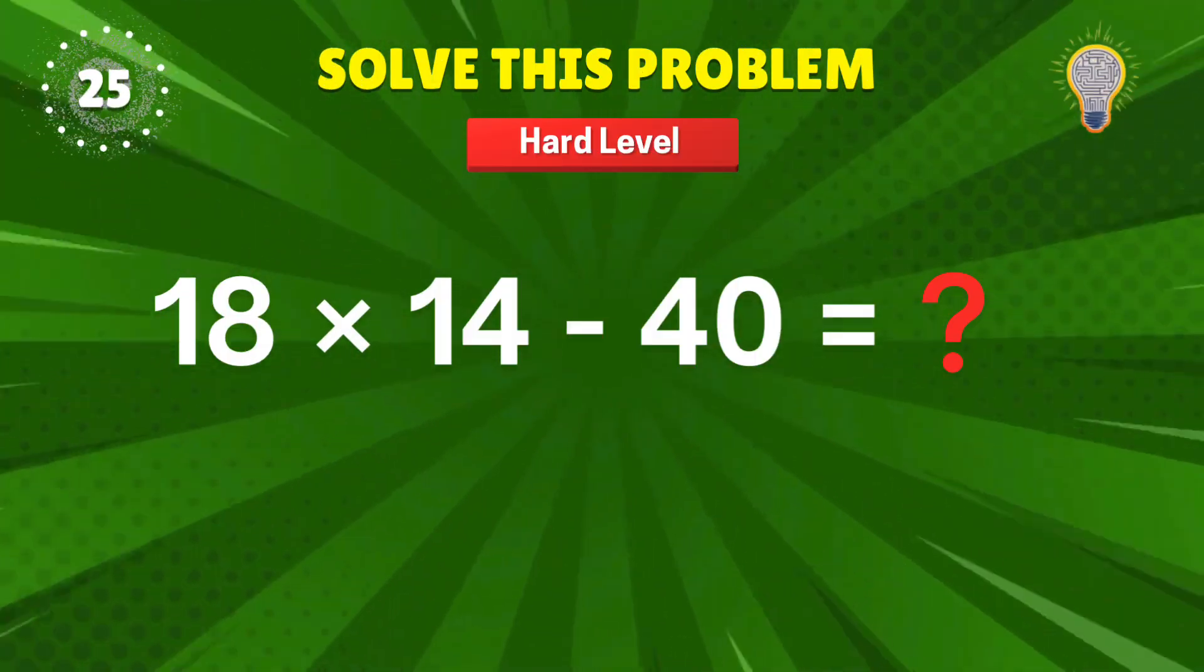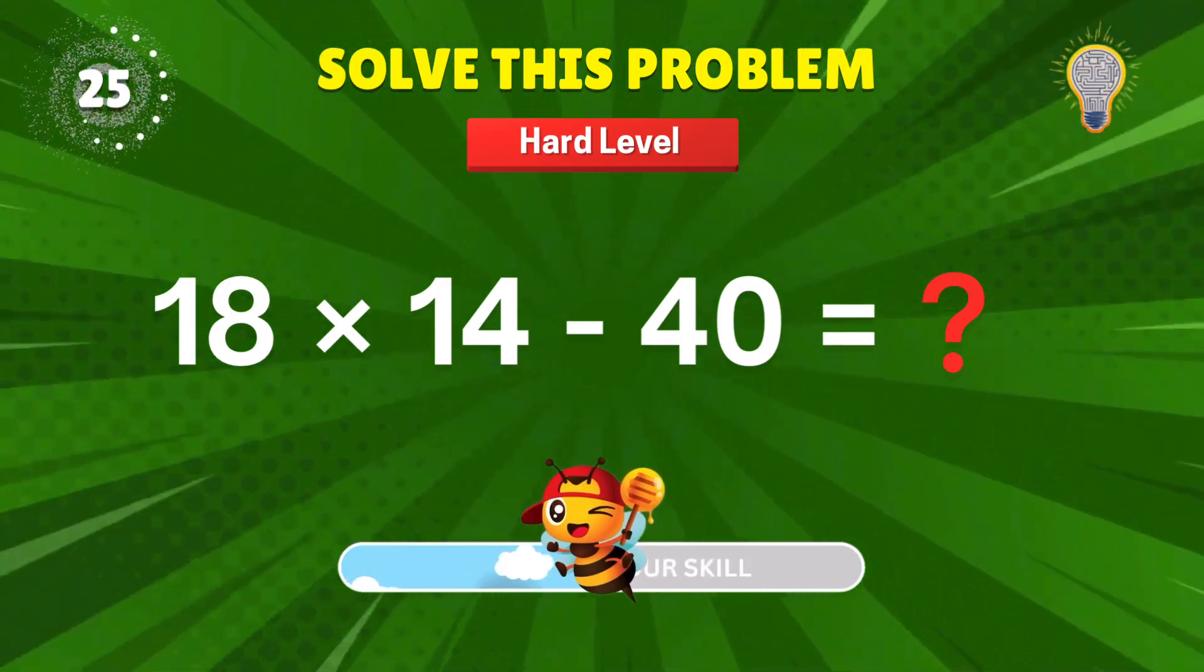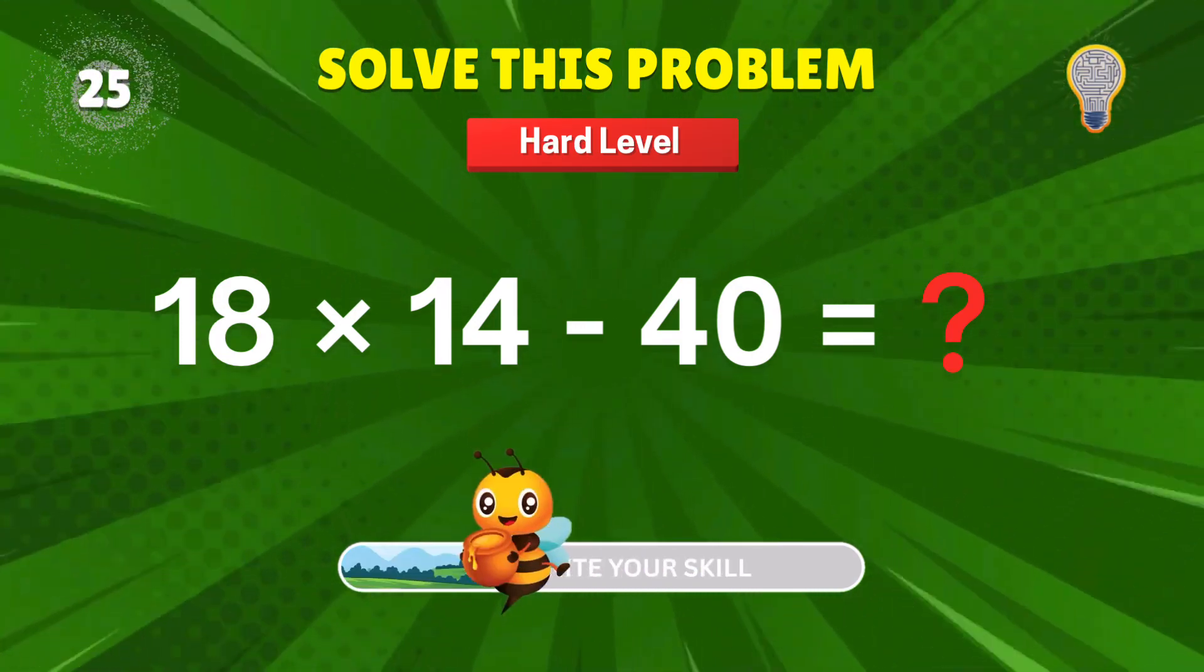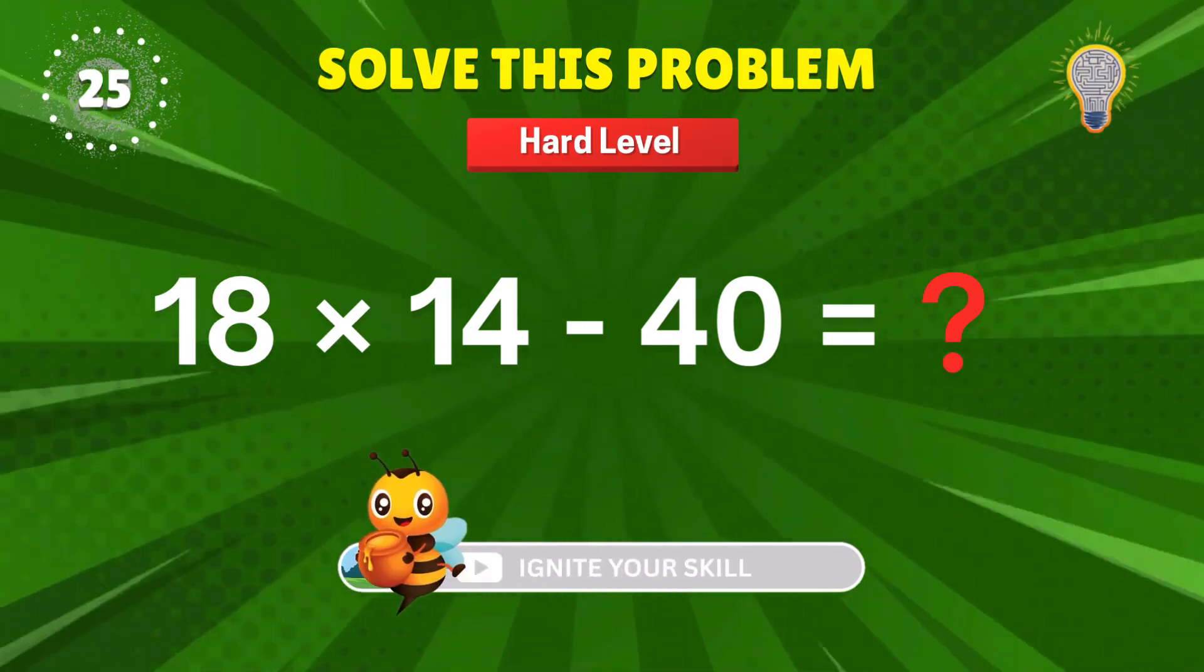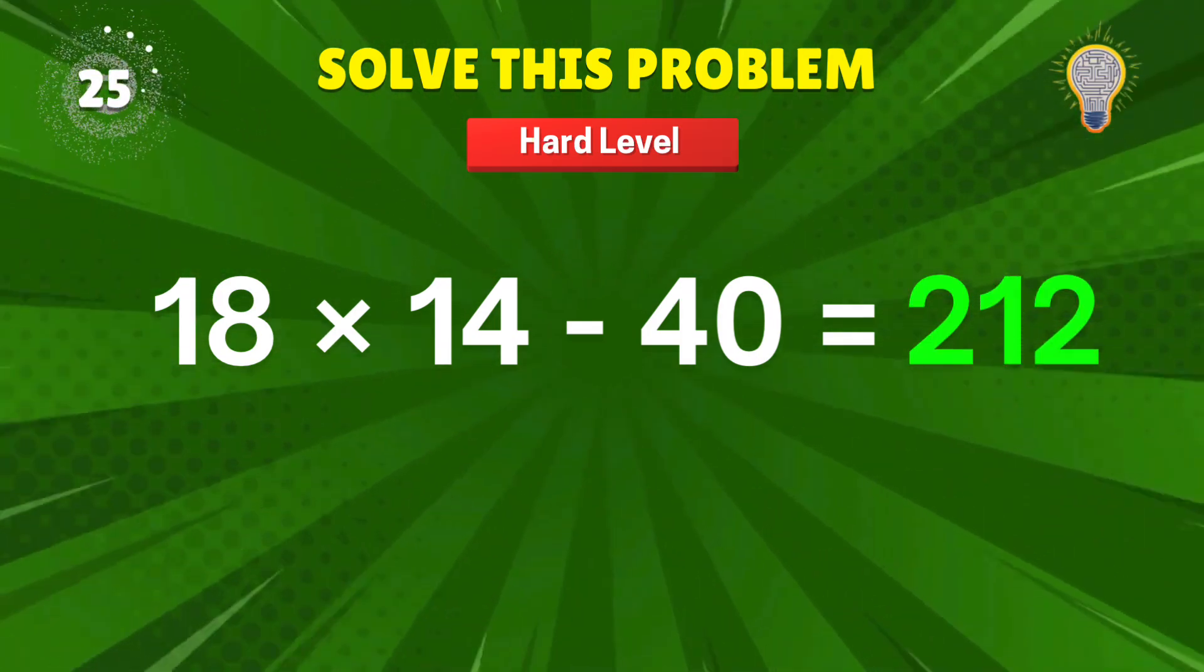18 times 14 minus 40? Big math. Big win. 212. That's some mega math. Plus 1.